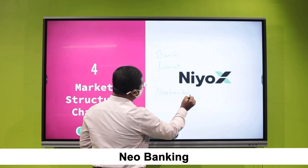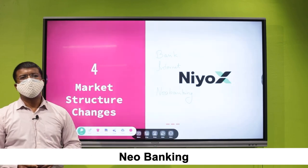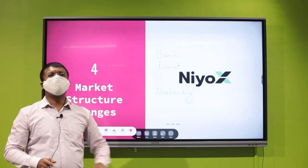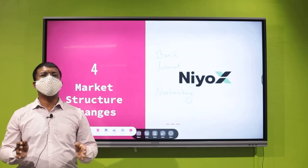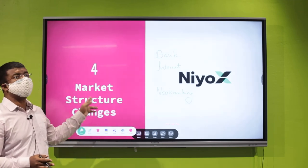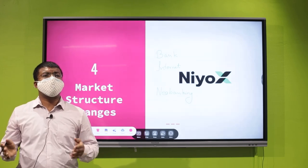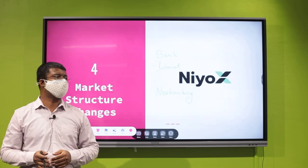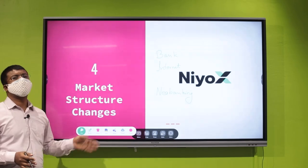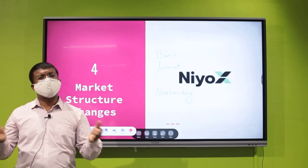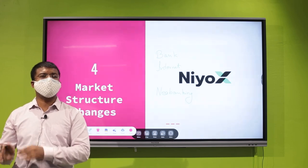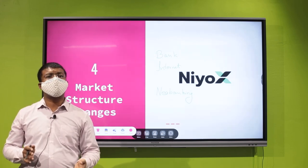Neo banking means branchless, contactless banking. Banks like Neo exist only online and have no brick-and-mortar branches. During the pandemic, innovators saw the change in market structure — with people unable to go to physical banks — and created fully online banking solutions. Similarly, there may be other areas where you see potential changes in market structure that you can leverage to start an entrepreneurial venture.